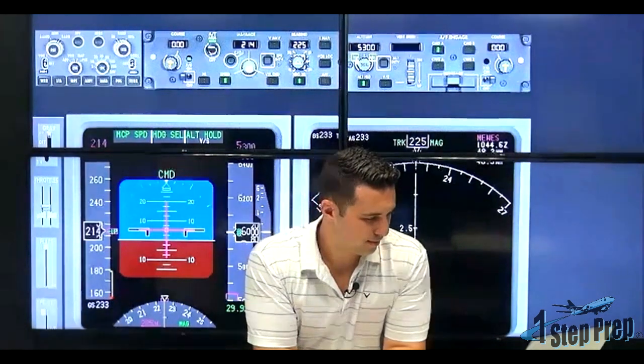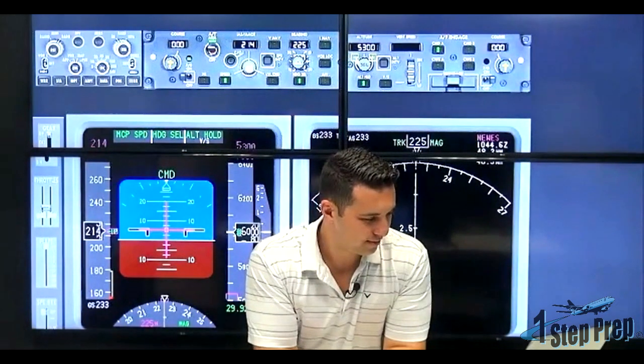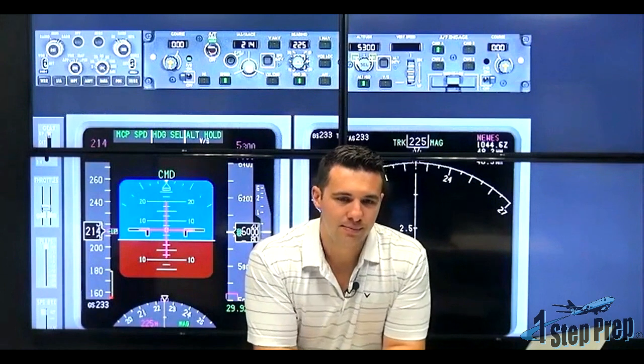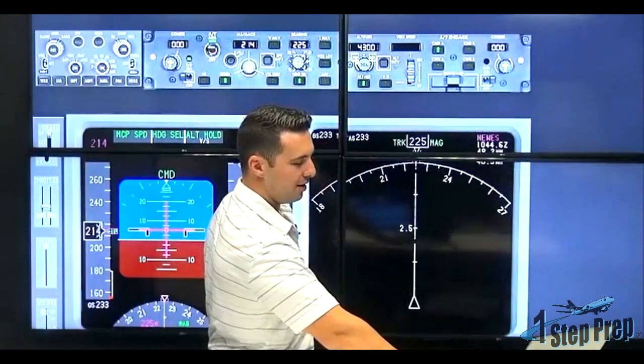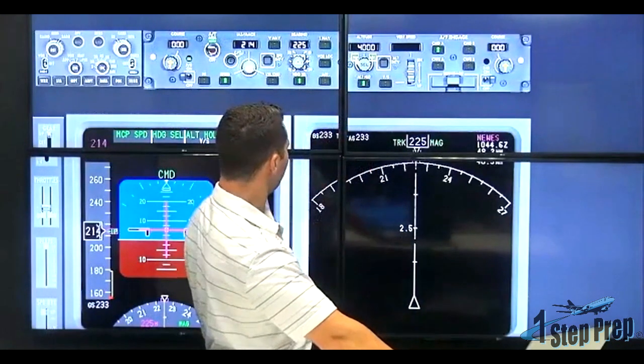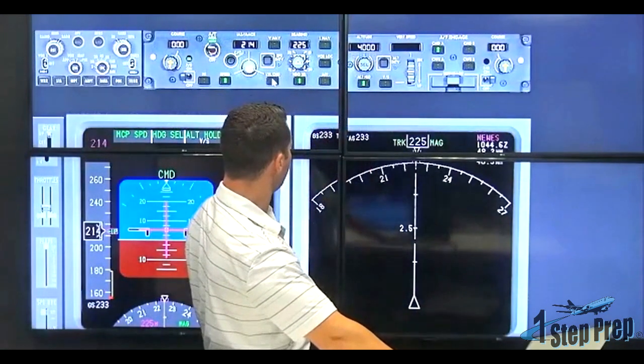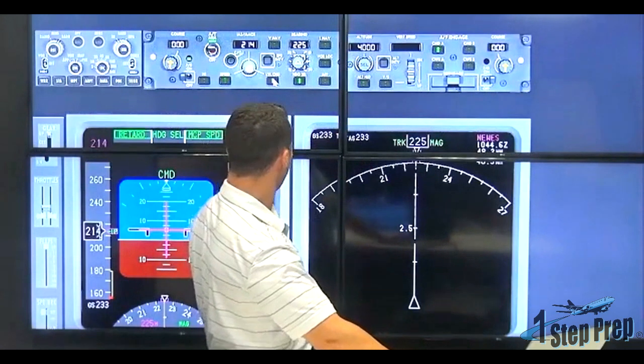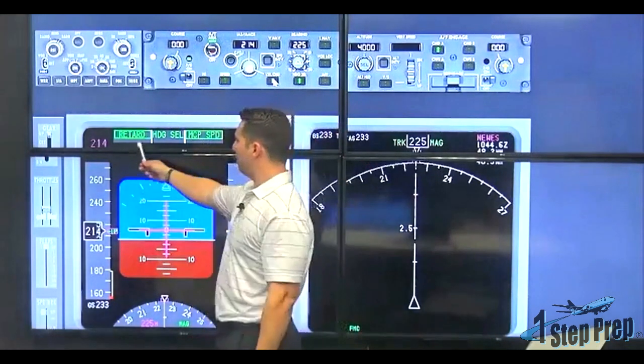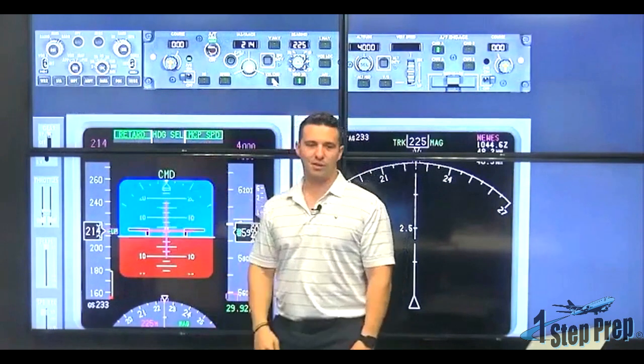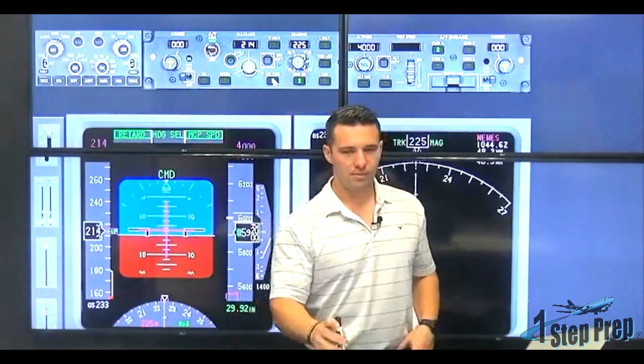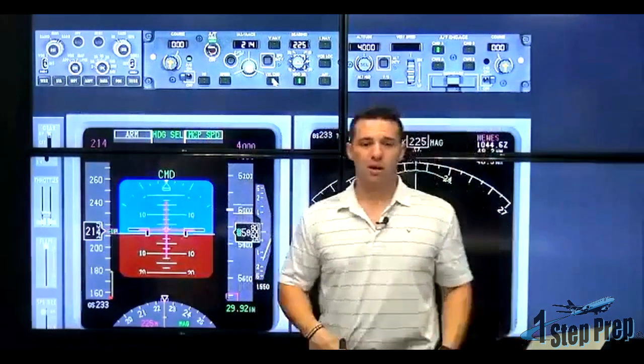All right. Anything else? Beautiful. Okay. Let's do a descent example for a second. Now, we're going to go down to 4,000. I'm going to hit level change. Read the FMA. It says retard MCP speed. So now what do you think the thrust levers are going to do? Idle. They're going to go to idle, right?